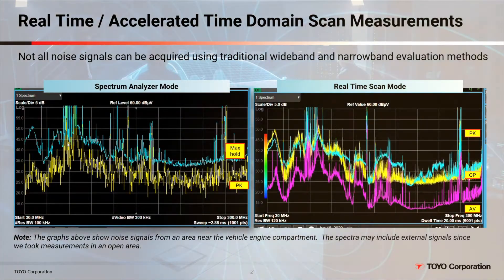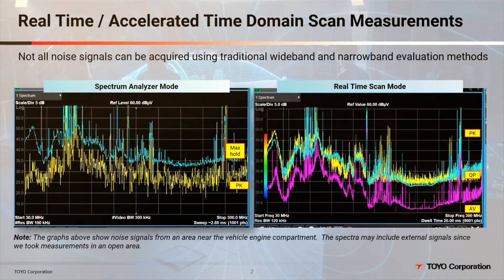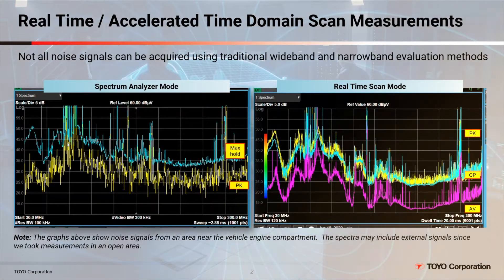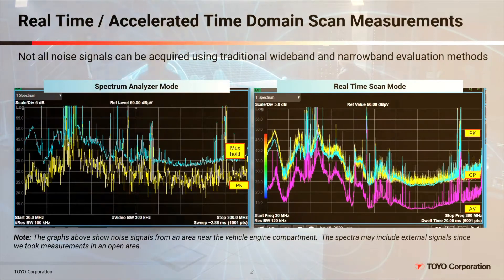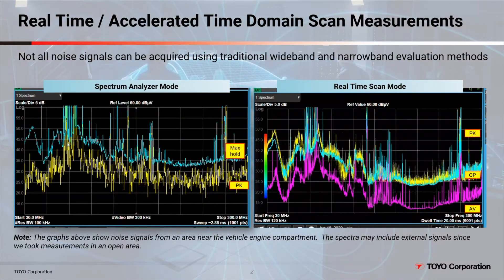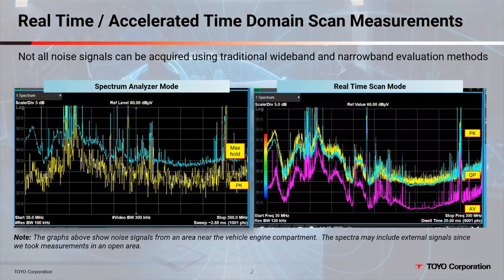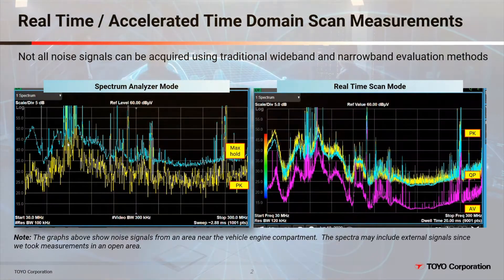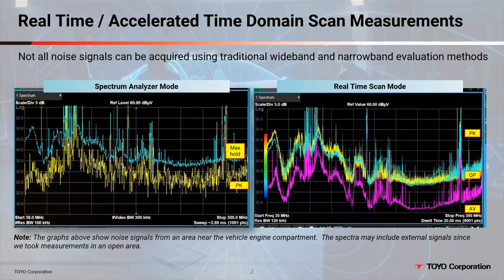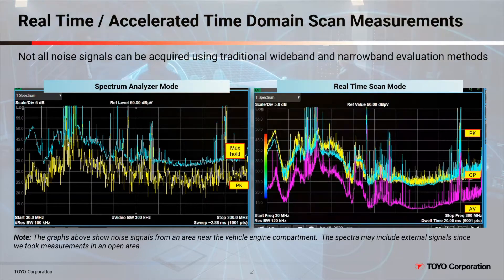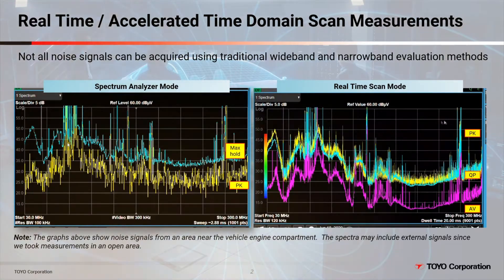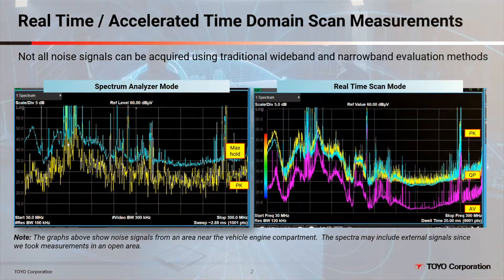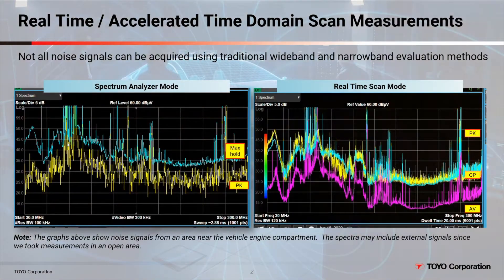The graph on the right shows the spectrum when measurements were taken using the real-time scan mode. This mode allows for the measurement of noise with no gaps at any frequency. It uses a unique technology called the accelerated time domain scan. This is important — no gaps at any frequency means all noise is captured, providing full signal visibility. When we powered on the windshield wipers and performed other car functions, wideband noise was observed from time to time.